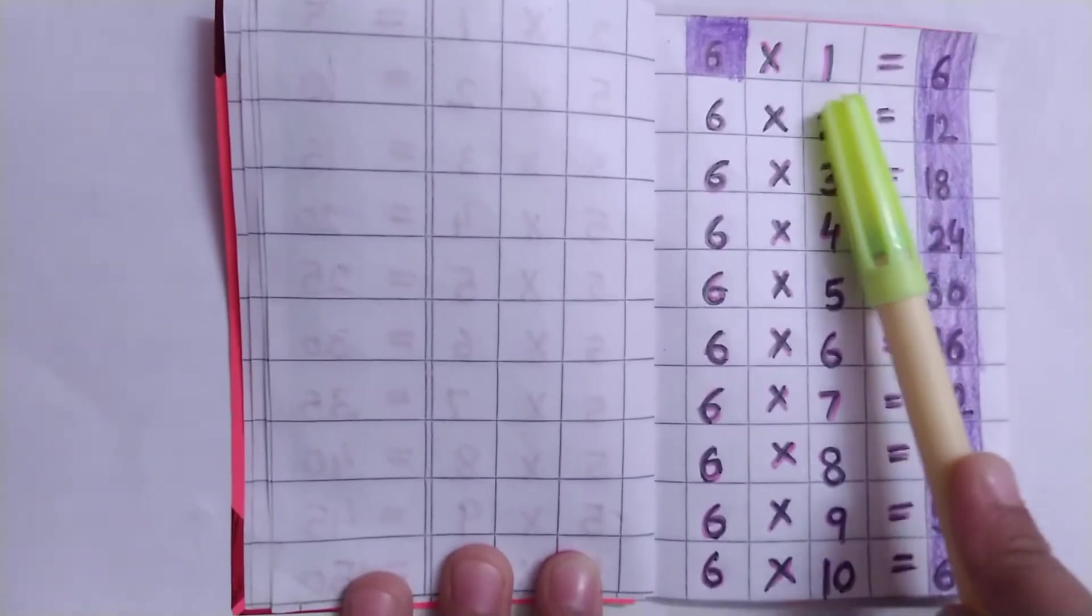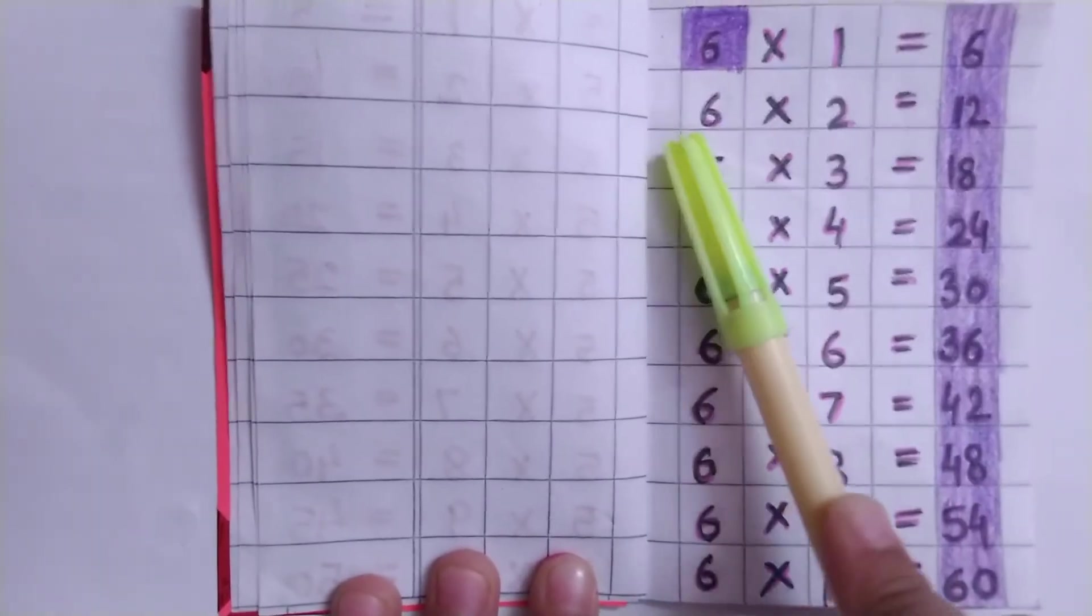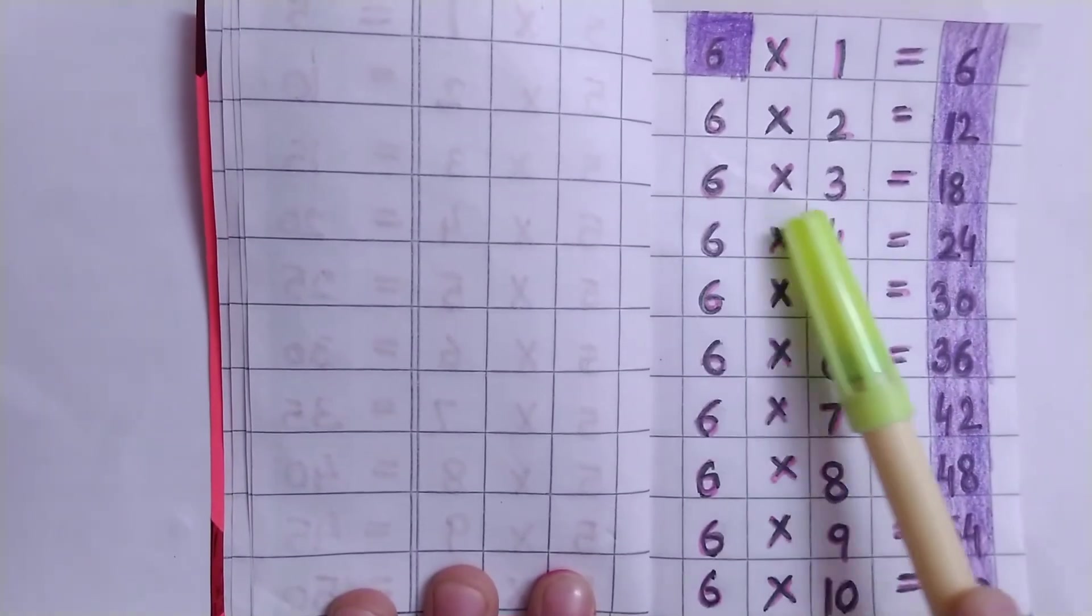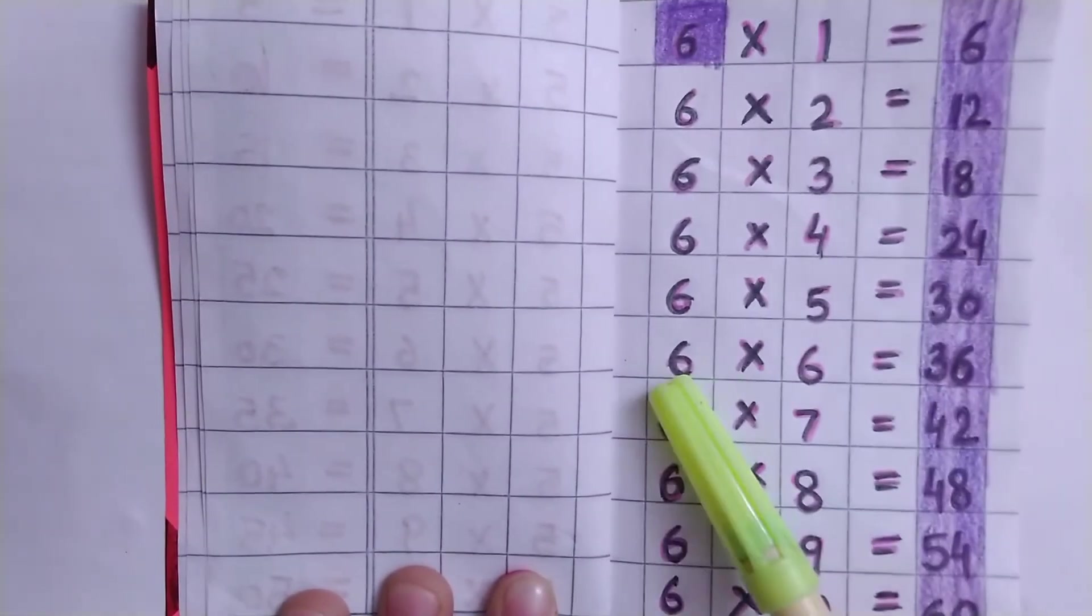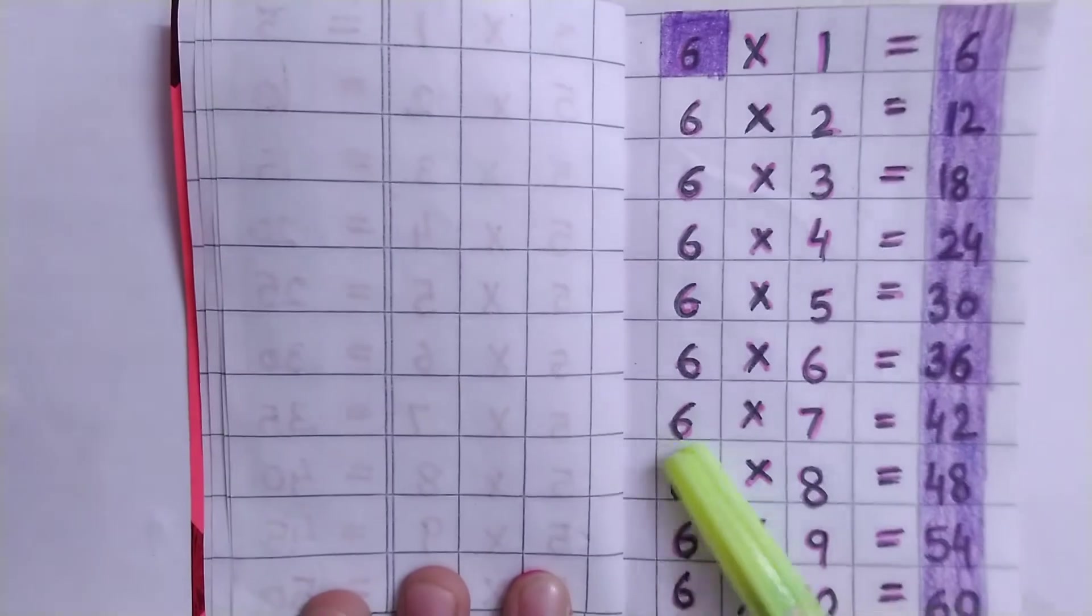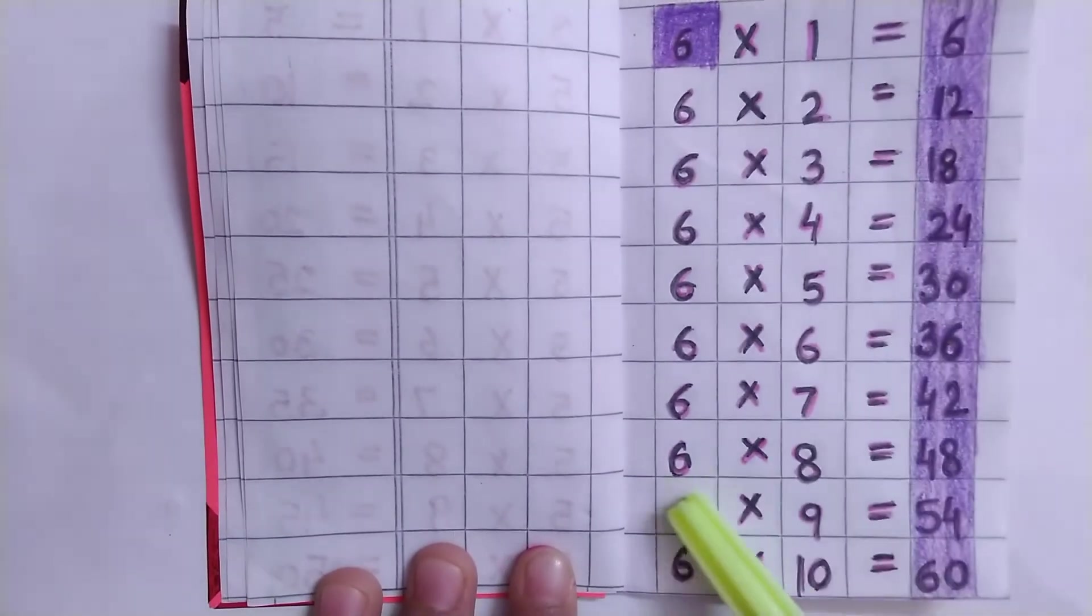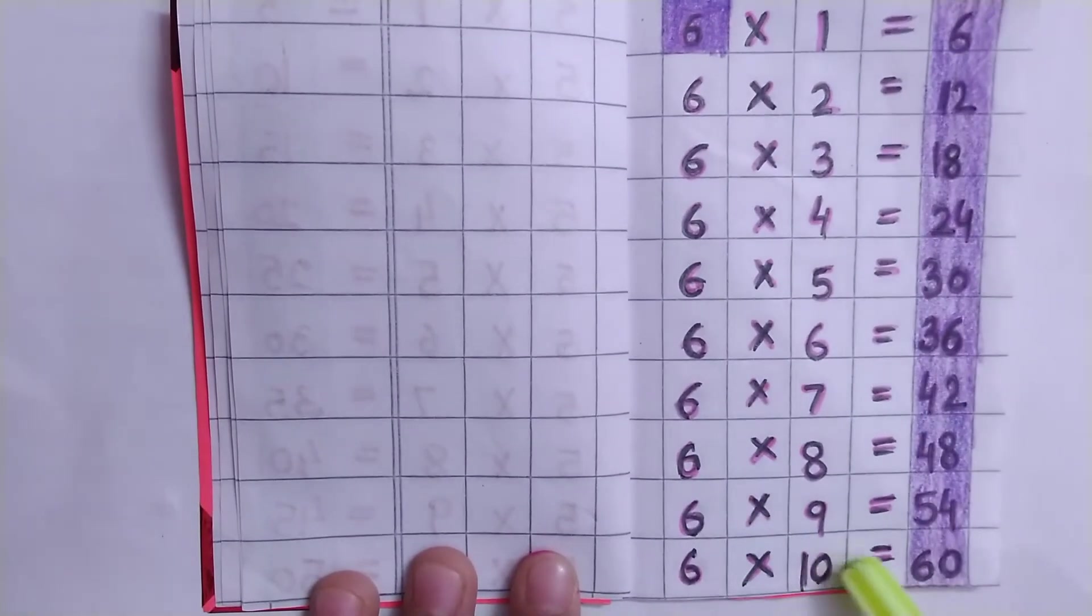Table of 6: 6×1=6, 6×2=12, 6×3=18, 6×4=24, 6×5=30, 6×6=36, 6×7=42, 6×8=48, 6×9=54, 6×10=60.